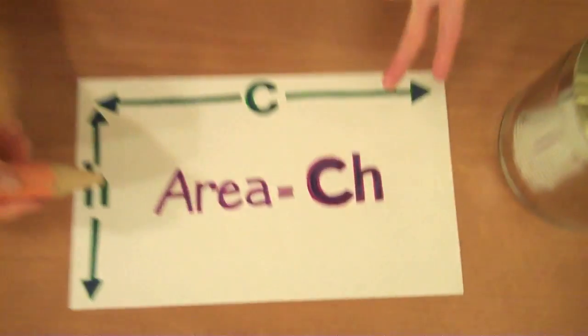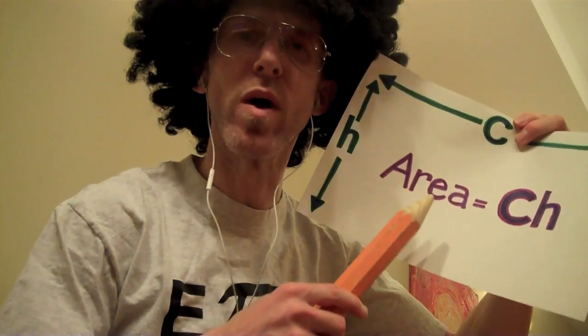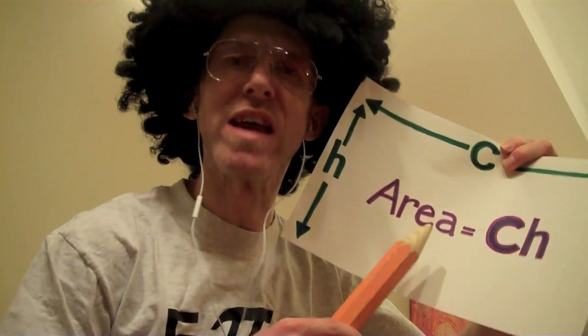What I got here is a soup situation. I picked the rectangle up and laid it on the table. C times H is the area of the label. You might not know it, you might not think I'm right. The rectangle's area is circumference times height.